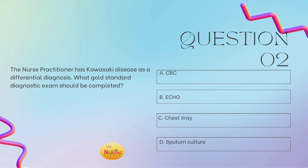Question number two: the nurse practitioner has Kawasaki disease as a differential diagnosis. What gold standard diagnostic exam should be completed? Is it A, a CBC; B, an echo; C, a chest X-ray; or D, a sputum culture? Take a moment and tell me what you got in the comments.